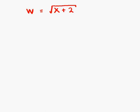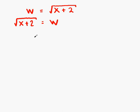This is example number 3. Our formula is w equals the square root of x plus 2. Our subject is w, and we want to change the subject of our formula to x. What we can do straight away is flip both sides so that we have x on the correct side. If w equals the square root of x plus 2, then the square root of x plus 2 is also equal to w. The thing causing difficulty is the square root sign — is there any way of getting rid of it?